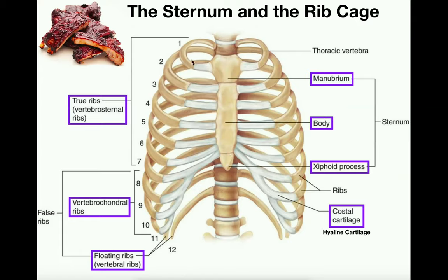For the ribs, there are 12 pairs of ribs. For every rib on the right side, we have another one on the left side. That means we have 24 total ribs, but 12 pairs. Typically when we're referring to ribs, we discuss the pairs.